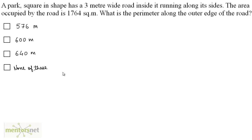A park, square in shape, has a 3 meter wide road inside it running along its sides. The area occupied by the road is 1764 square meters. What is the perimeter along the outer edge of the road?